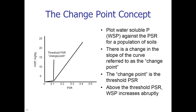Let us look at the change point concept. Plotting water-soluble P on the y-axis against the PSR for a population of soils, we notice a change in the slope of the curve referred to as the change point. This change point is the threshold PSR value. Above the threshold PSR, water-soluble P increases abruptly. In this particular diagram, the change point is shown at about 0.1 PSR. We will deal with actual numbers in a later lecture.